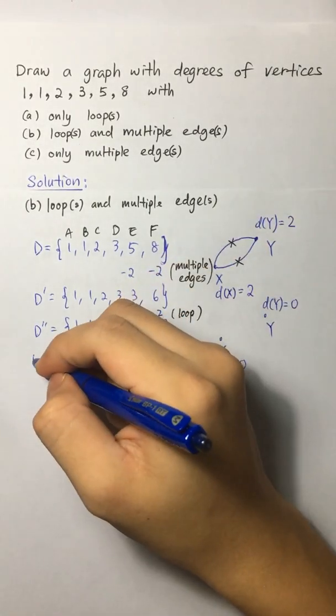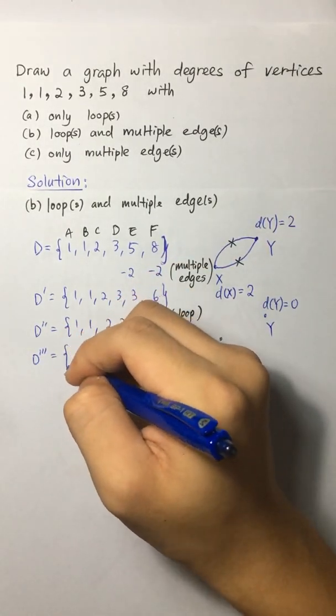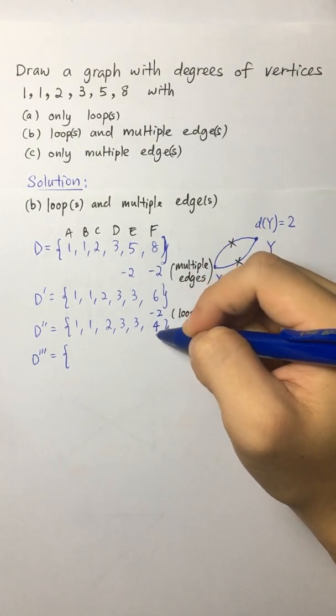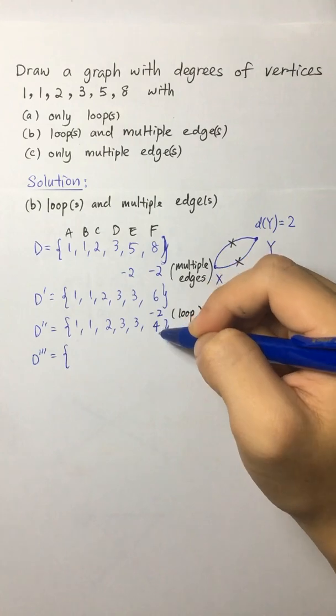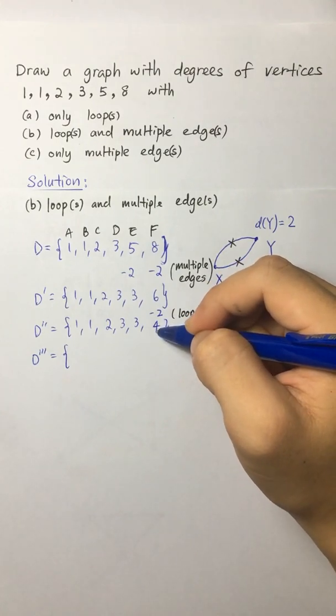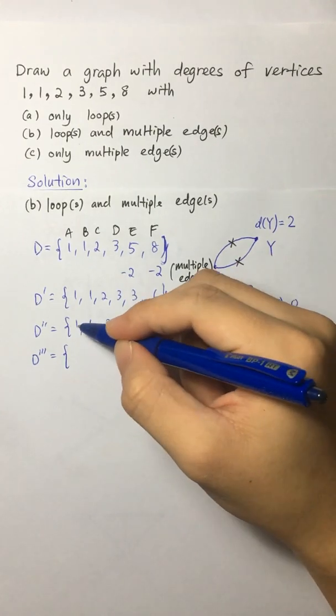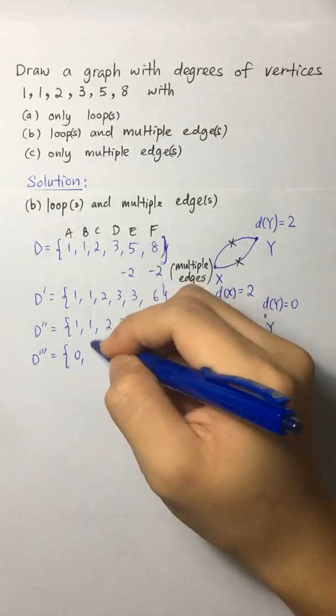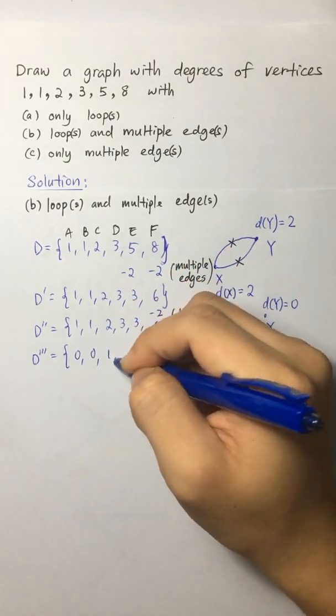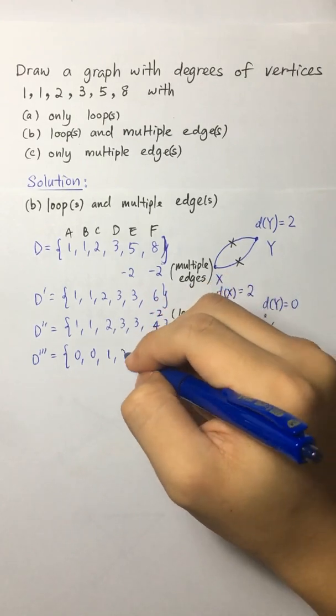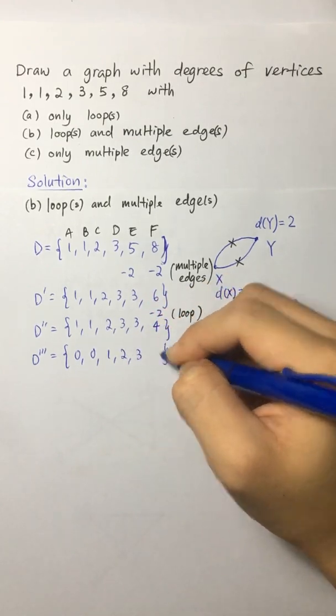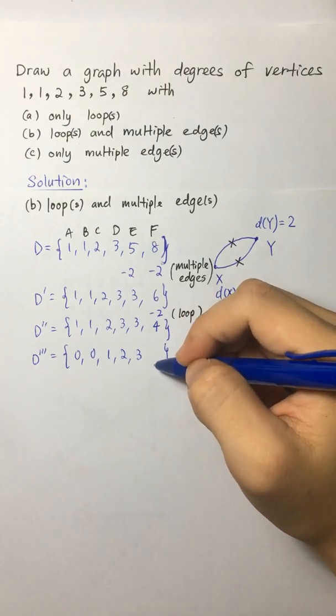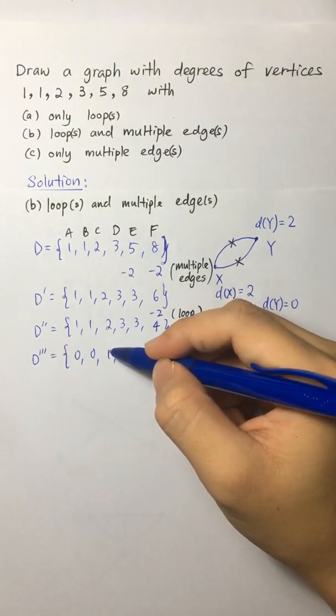And then we can start repeating the process again by removing the vertex F. When we remove the vertex F, we have to remove all the corresponding edges to it. So let's say we can remove it from A, B, C, and D. So 1 minus 1 is 0, 1 minus 1 is 0, 2 minus 1 is 1, 3 minus 1 is 2, 3. And we don't have to write the vertex F anymore because we have already removed it. Now we left with C, D, E.